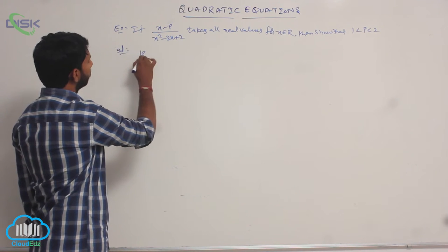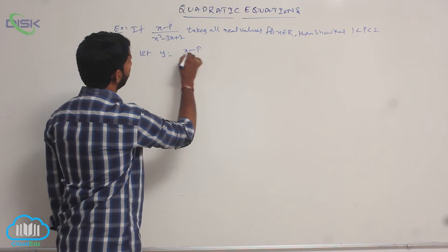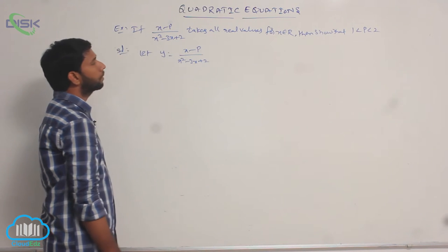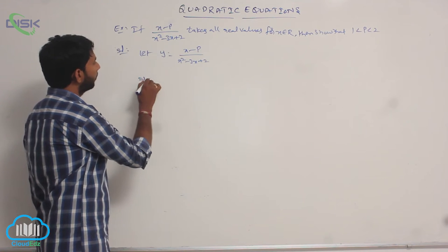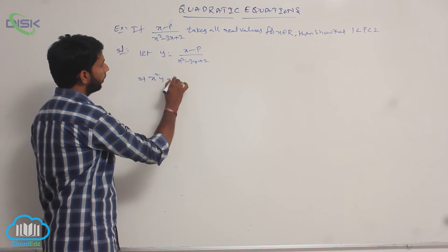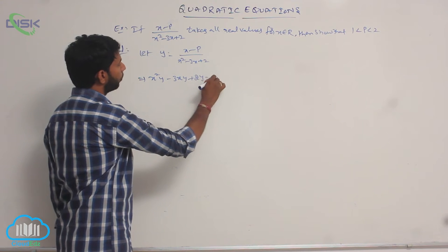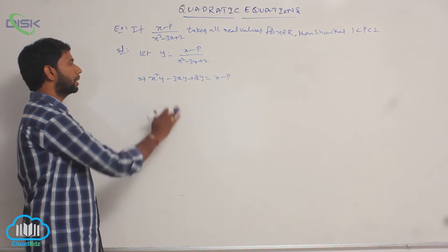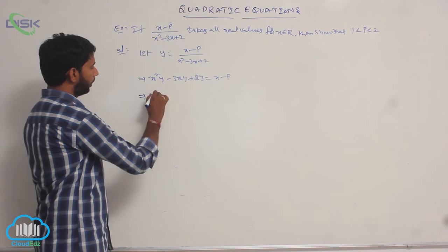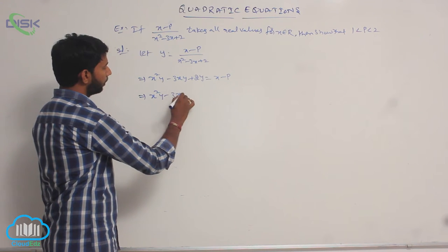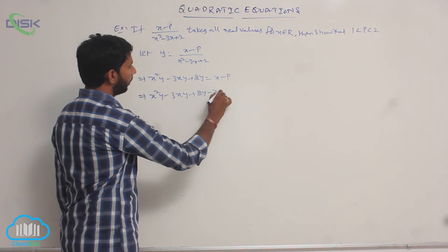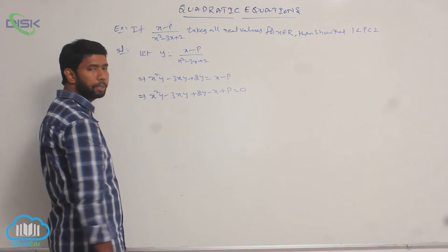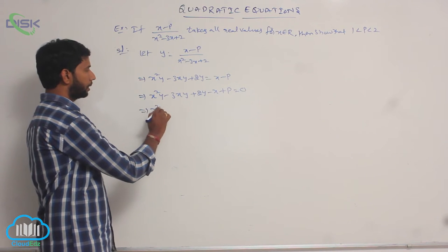Consider y equal to (x minus p) divided by (x squared minus 3x plus 2). Cross-multiplying the terms gives: x squared y minus 3xy plus 2y is equal to x minus p. Rearranging: x squared y minus 3xy plus 2y minus x plus p equals 0.